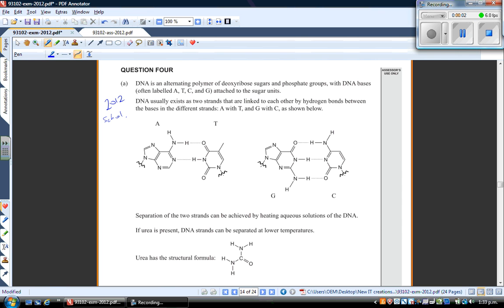Okay, so today I'm taking a look at question 4 from the 2012 scholarship paper. Part A is about base pairing in DNA. So we'll read the question first. DNA is an alternating polymer of deoxyribose sugars and phosphate groups with DNA bases often labeled A, T, C and G attached to the sugar units.